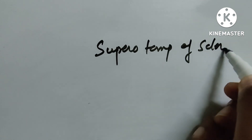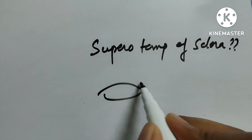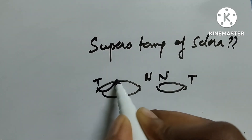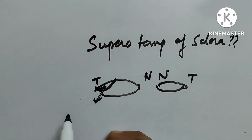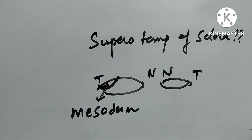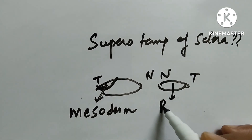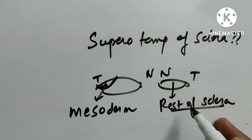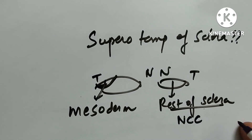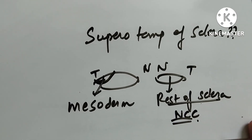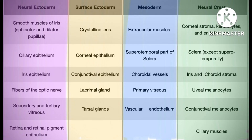One more thing about sclera — superotemporal part. Nasal versus temporal: the superotemporal part of sclera comes from mesoderm, whereas the rest of sclera comes from neural crest cells, because nasal and neural are rhyming together.